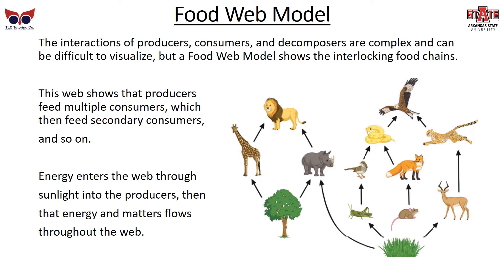One model typically used — especially when teaching students — is the food web model. The interactions between producers, consumers, and decomposers are complex, not straight lines, and can be hard to visualize. The food web model shows the interlocking food chains. This web shows that producers feed multiple consumers: the grass feeds the grasshopper and the antelope as well as the rhinoceros, while the giraffe only eats the tree. Secondary consumers include birds that eat grasshoppers and lions that eat giraffes. Energy enters the web through sunlight to the producers, flows through the web, eventually going back to decomposers, back into the ground and back into the plants.